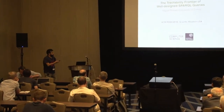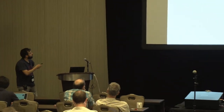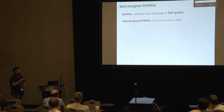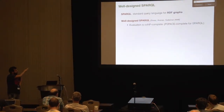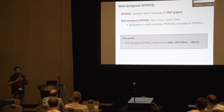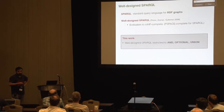This work is about SPARQL, which is a standard query language for the semantic web, and in particular for RDF graphs. We focus on the well-designed SPARQL fragment, which has several nice properties. One of those properties is that the evaluation problem is easier for this fragment — it is PSPACE-complete, while in general it is PSPACE-complete. In this work we focus on the operators AND, OPTIONAL, and UNION, which form the core of well-designed SPARQL.